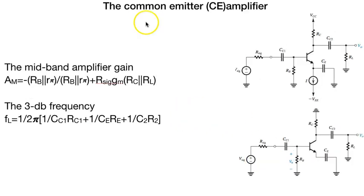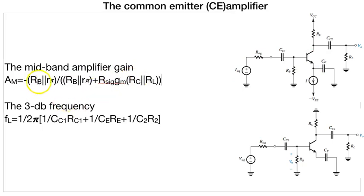For the common emitter, we have talked about the common source earlier. Now for the common emitter midband gain, amplifier will be minus Rb in parallel with Rπ divided by Rb in parallel with Rπ plus R signal, Gm into Rc in parallel with RL. The 3dB frequency is FL equals to 1 over 2π, 1 over C1 RC1 plus Ce Re plus C2 R2.